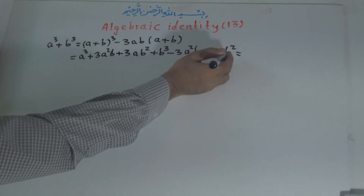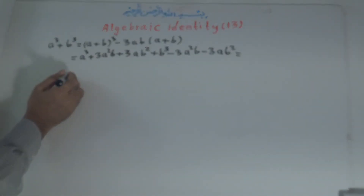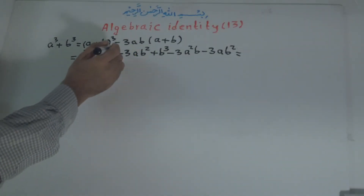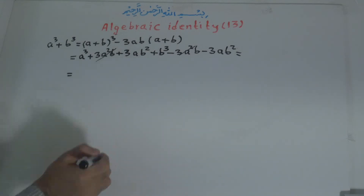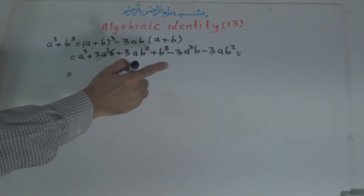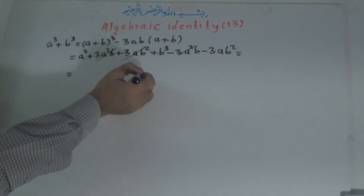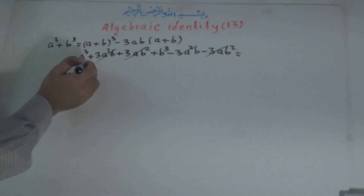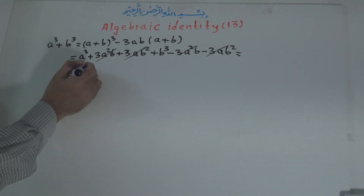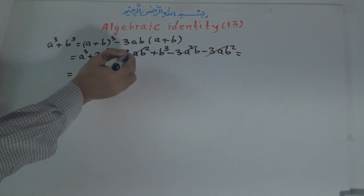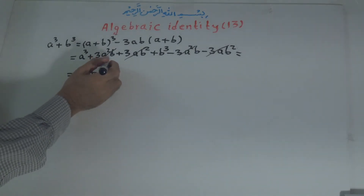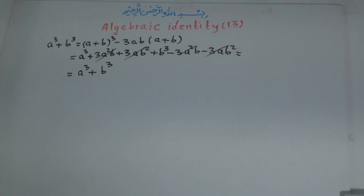So now this is equal to — we collect like terms. The positive 3a squared b and negative 3a squared b cancel. The positive 3ab squared and negative 3ab squared cancel. What is remaining is a to the power of 3 plus b to the power of 3.